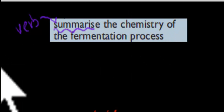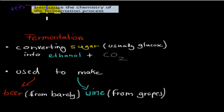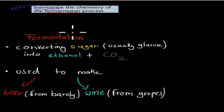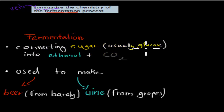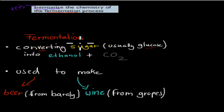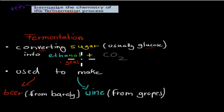Before we start, I want to make sure I go over the word fermentation again — I did cover it in the last video, but I'll go over it again for anyone that hasn't watched that. Fermentation is the conversion of sugar, which is usually glucose, into ethanol and carbon dioxide. So converting means changing from sugar into ethanol and carbon dioxide, and yeast usually has to be present for that to happen.